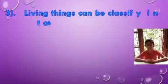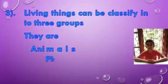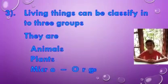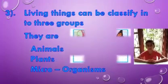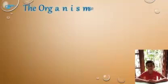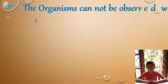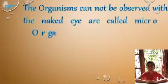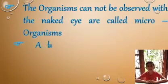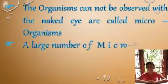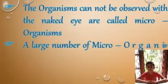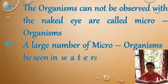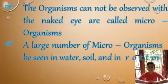Living things can be classified into three groups: animals, plants, and microorganisms. Organisms that cannot be observed with the naked eye are called microorganisms. A large number of microorganisms can be seen in water, soil, air, and inside food.